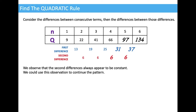It's certainly possible to make a prediction about subsequent terms in a sequence by observing a pattern without necessarily making a rule for it. But this video is going to show you how to make the actual algebraic rule that links Q and n, or that expresses Q in terms of n.